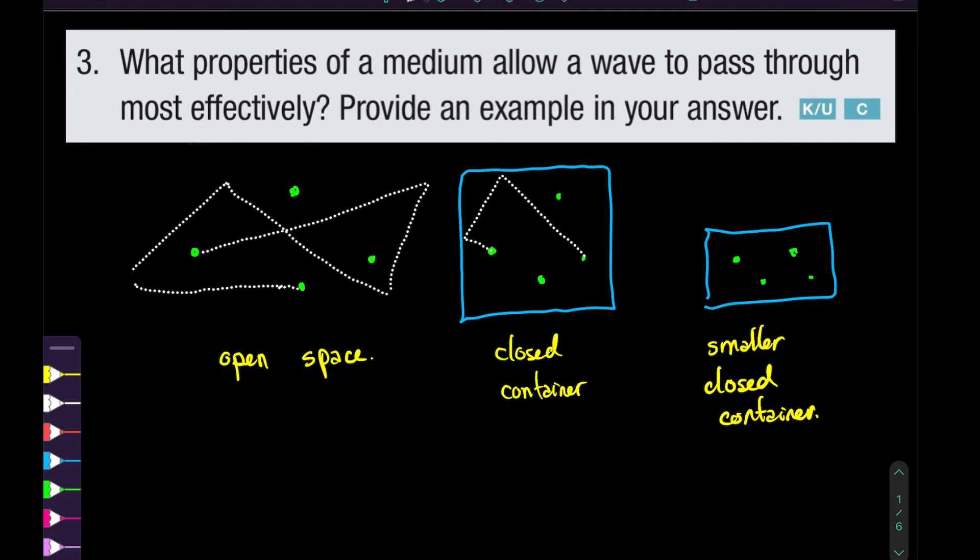If we take the same number of particles in a smaller confined space, then collisions are much more likely to occur. This means if we have more particles in a particular area, the higher the speed of the wave is going to be.